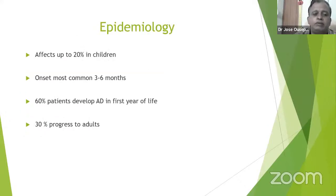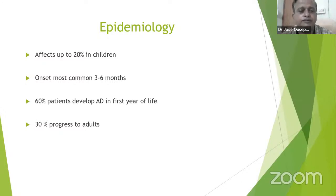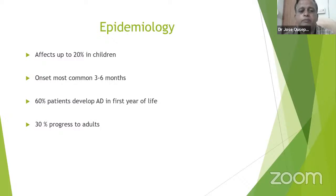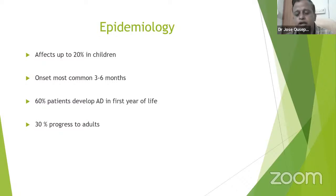Regarding epidemiology, Atopic Dermatitis usually affects around 20% of children in our communities. It is most common between the age group of three to six months, but around 60% of patients develop Atopic Dermatitis in the first year of life, of which around 30% can progress to adults with Atopic Dermatitis.